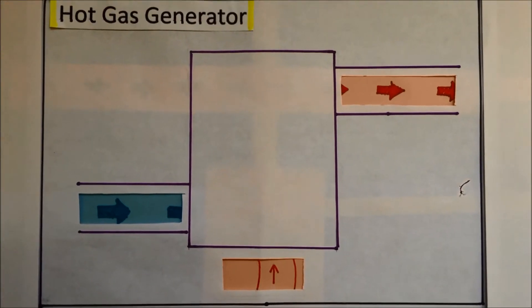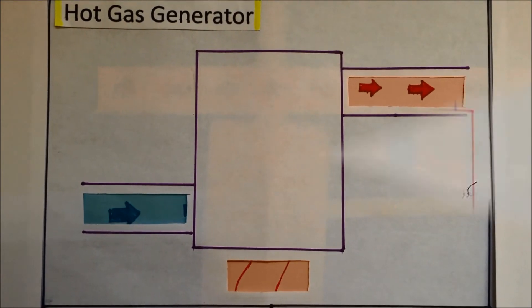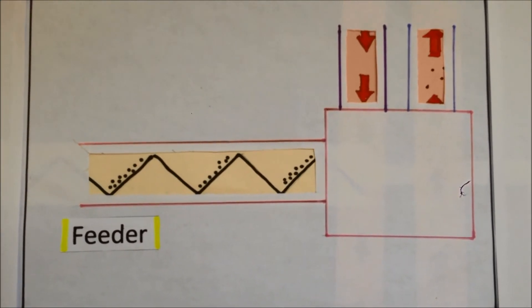Hot gas is produced in the HGG by the combustion of coal peas in a fluidized sand bed. Then, wet materials are introduced into a hot air stream using a screw feeder.